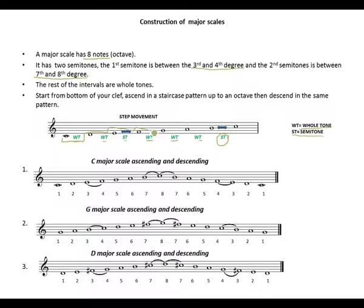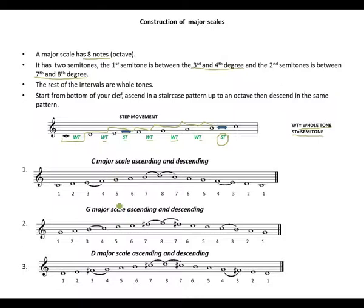This is the step movement of a major scale — it's in a staircase pattern, going up continuously to the end. The following is an ascending and descending C major scale. It's without key signatures, so therefore expect to see accidentals before the notes.